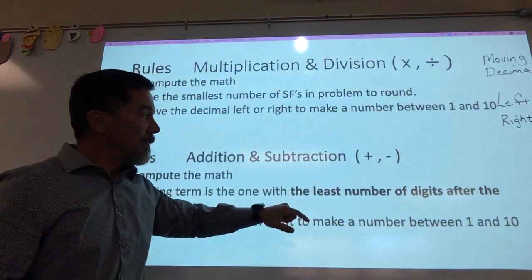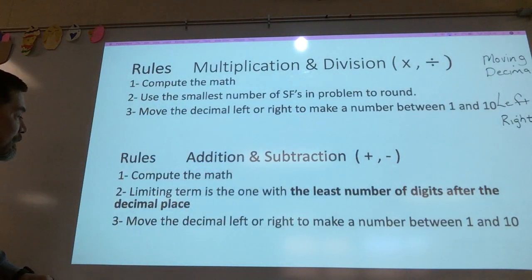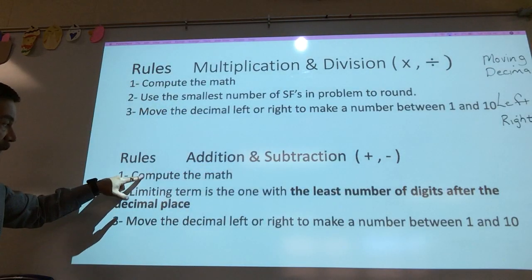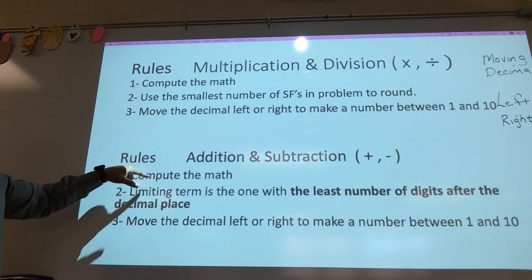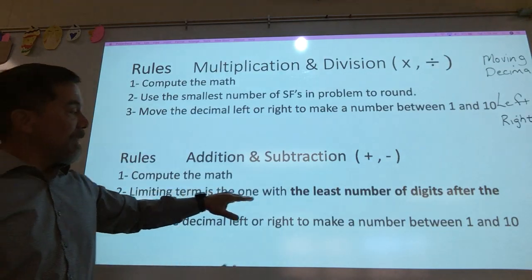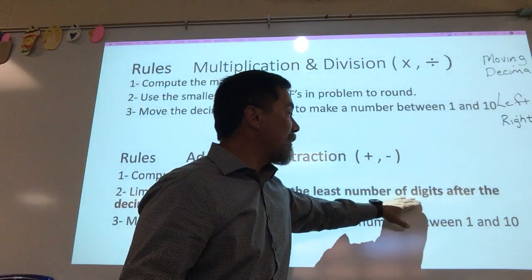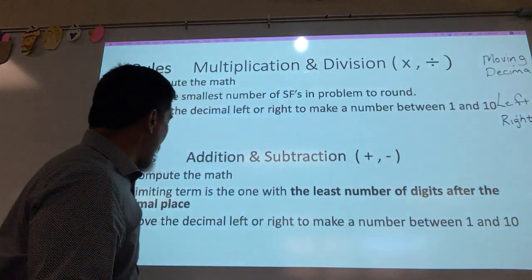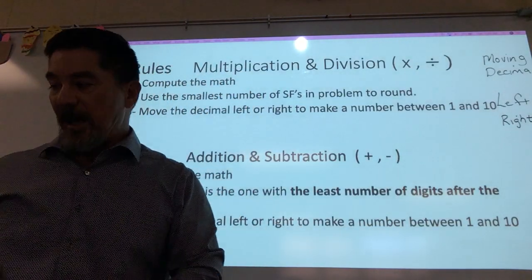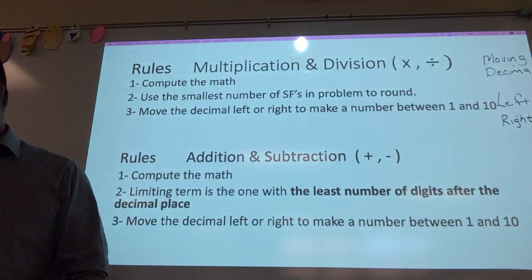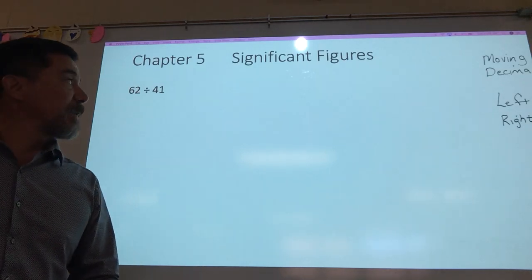For addition and subtraction, it's a little different. You do the math, but then you look at the number with the least amount of digits after the decimal. We'll go through that.